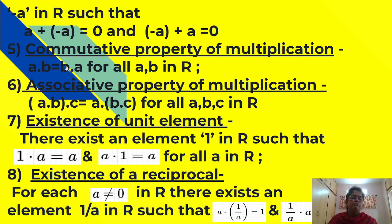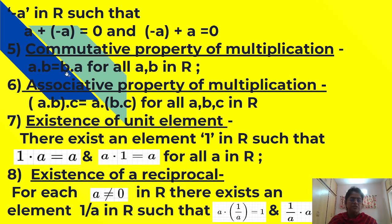Fifth property: commutative property of multiplication. It means that a into b is equal to b into a for all a, b in R. If a is 2 and b is 3, then 2 into 3, which is 6, is equal to 3 into 2, which is also 6.